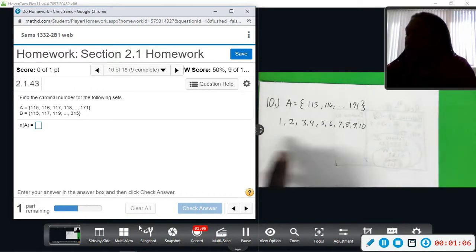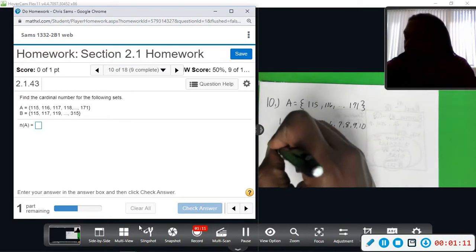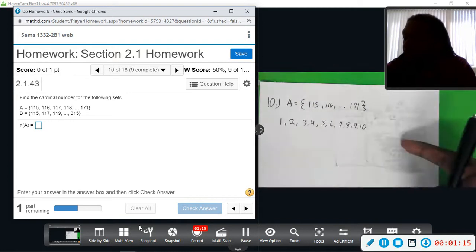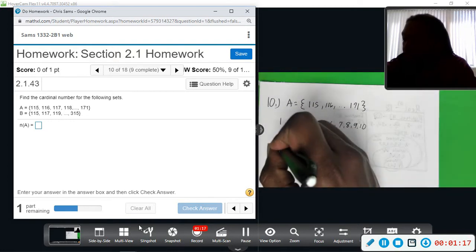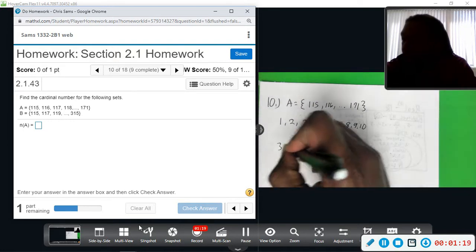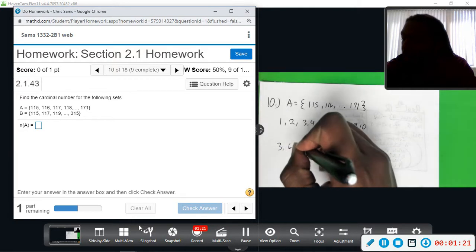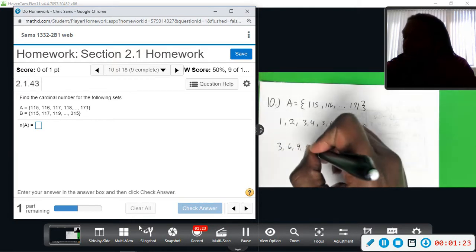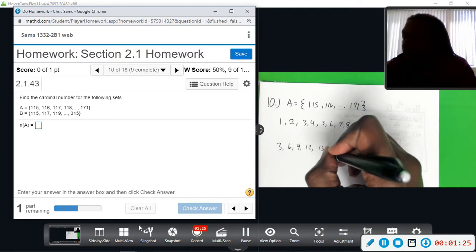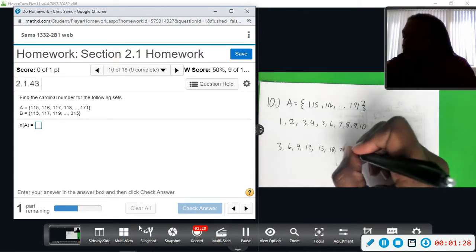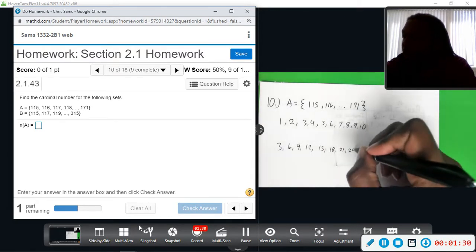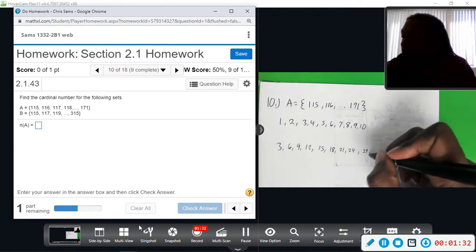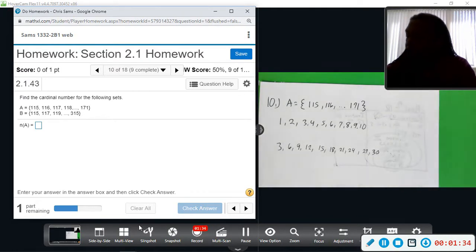I will also do another set as an example. 1 to 10, but I'm going to count by threes. So I'm going to do 10 numbers, counting by threes: 3, 6, 9, 12, 15, 18, 21, 24, 27, and 30.